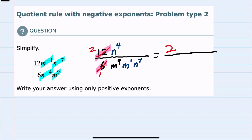If I look at our M's, both M's are in the denominator. I have M9 times M1. And I know that when I multiply with the same base, I add the exponents. So in the denominator, that would be M10.